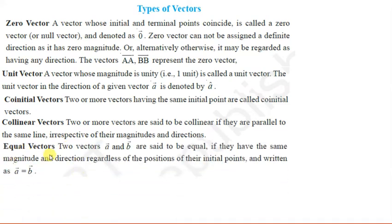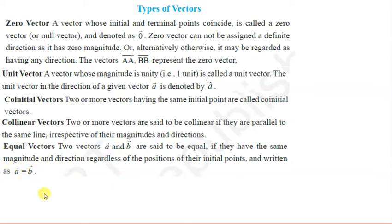Then we have equal vectors. Two vectors are said to be equal if they have the same magnitude and direction. Equal vector ke liye condition yeh hai ki magnitude bhi same honi chahiye aur direction bhi same hona chahiye, regardless of the positions of their initial points. Unka initial point different ho sakta hai, par magnitude aur direction same hona chahiye. If two vectors a and b are equal, we write it as vector a equal to vector b.